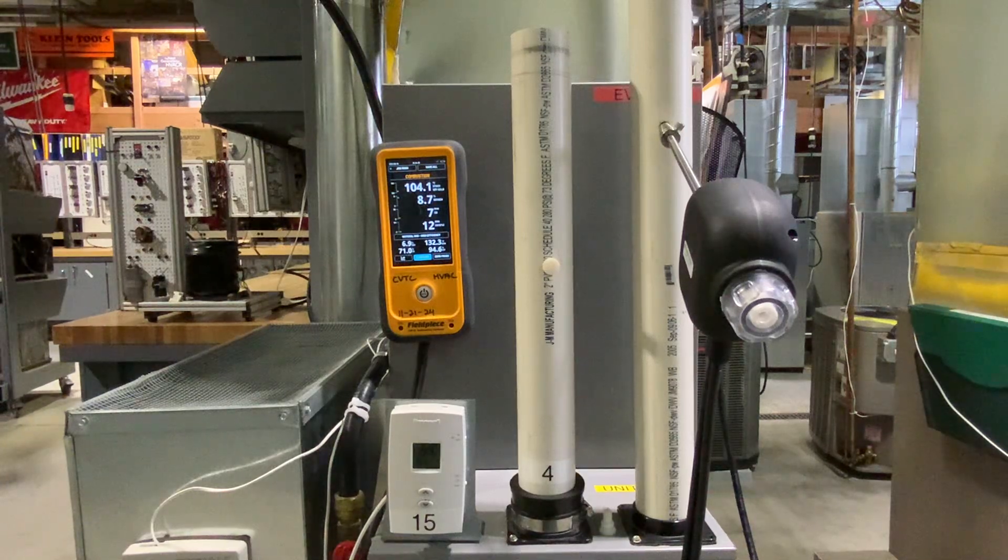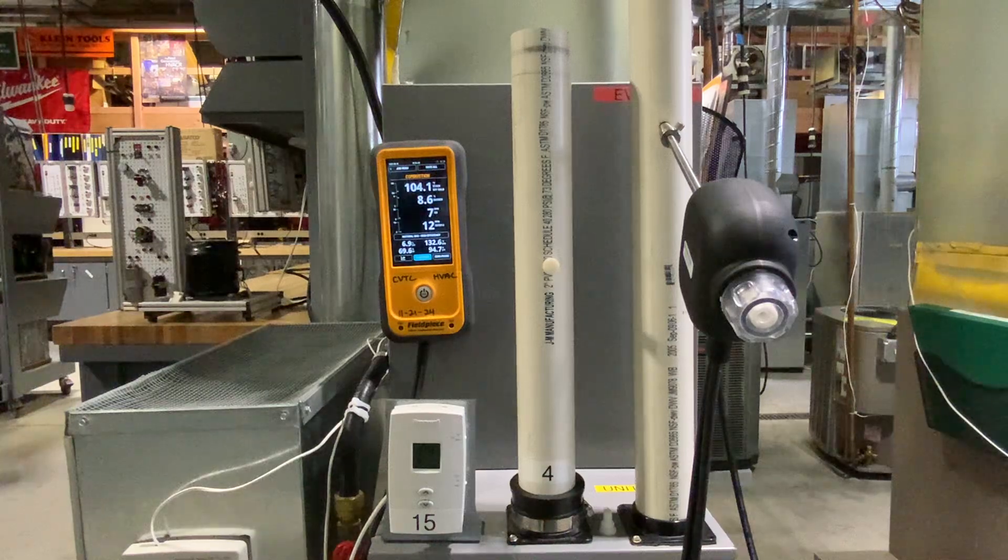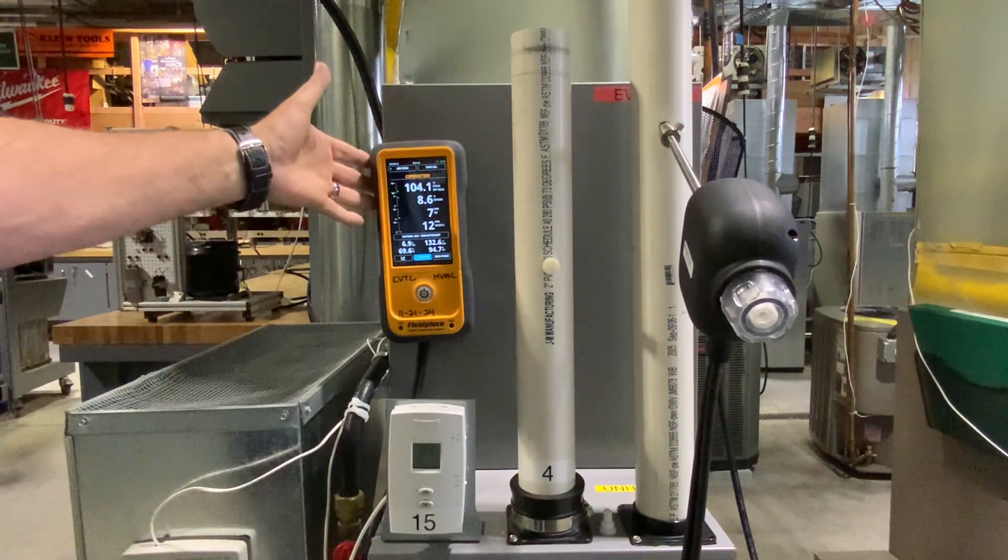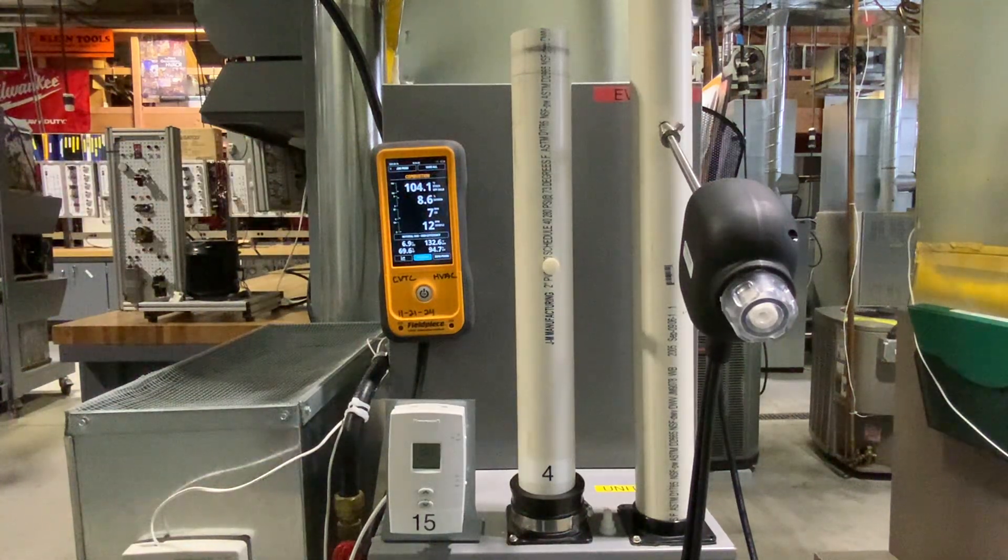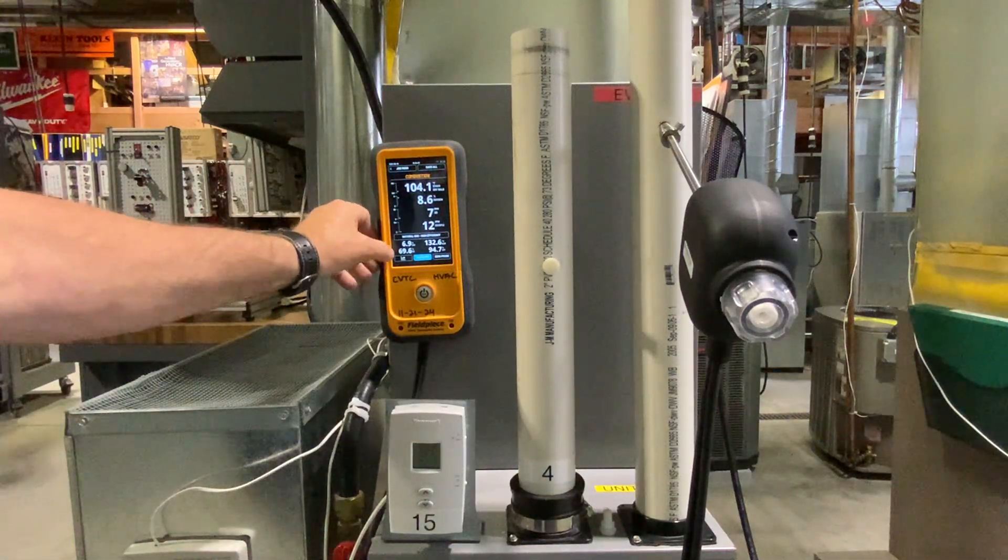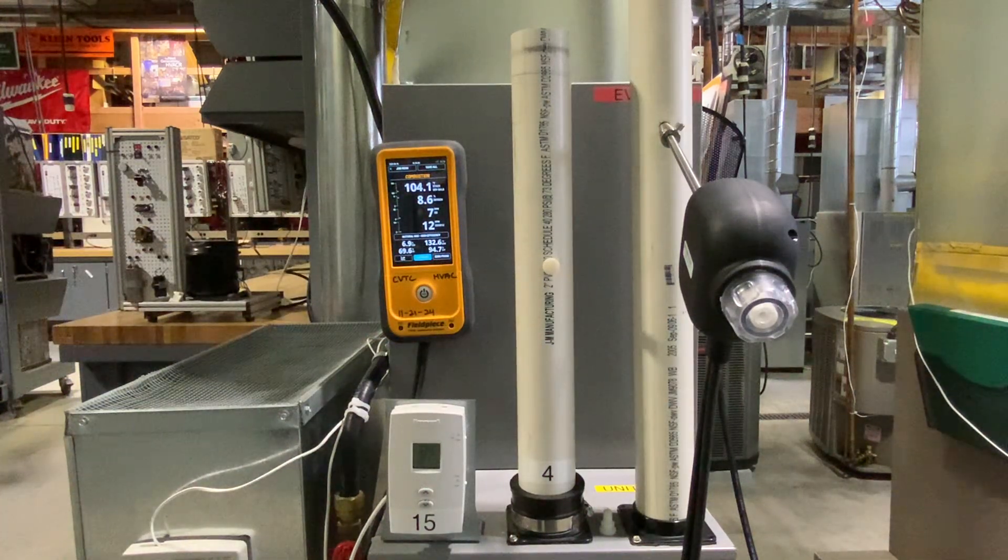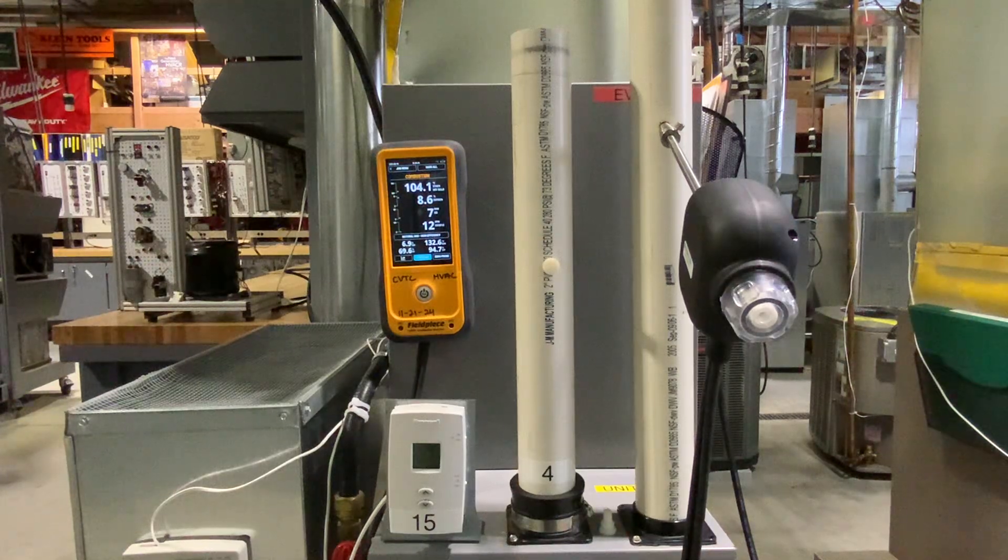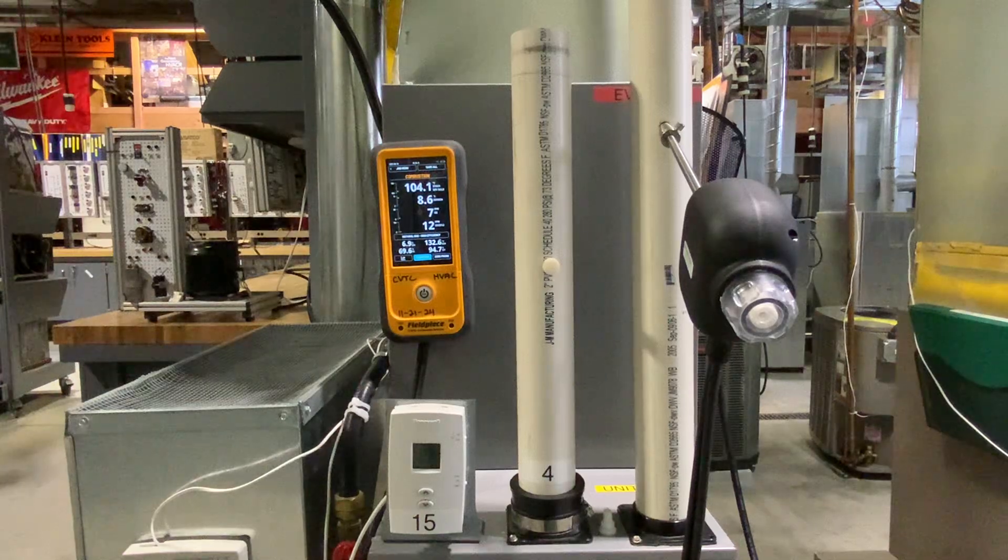CO2, 10% or less. Our O2 should be 8.5 to 10%. So if we look at our readings here, our oxygen is 8.6. Our CO is 7. Our CO2 is 6.9. Our excess air is 69.6 and our efficiency is 94.7. So we're running almost 95% efficient on this furnace. The rest of the numbers fall into the categories that we're looking for.